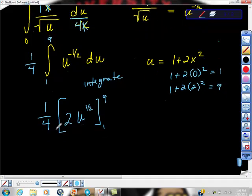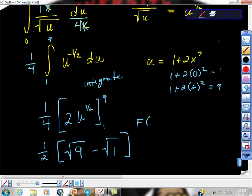Look, 2 over 4 is 1 half, so there's my 1, I took the 1 half out. And now I want square root of 9 minus the square root of 1. And if you're asking what this is, this, of course, is the fundamental theorem of calculus, and we learned that before.